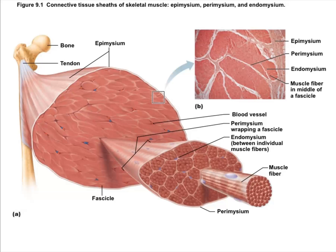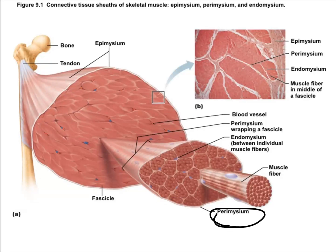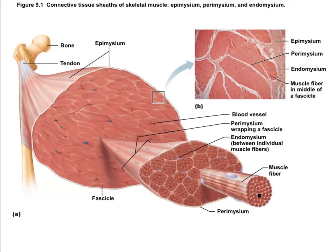For a quick anatomy review: the entire muscle is surrounded by a connective tissue called epimysium. Within the muscle there are bundles of muscle fibers called fascicles, which are surrounded by perimysium. Within fascicles are individual muscle fibers, surrounded by endomysium. What we're really looking at is muscle fibers and, more specifically, the individual myofibrils that are within the muscle fiber.